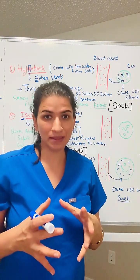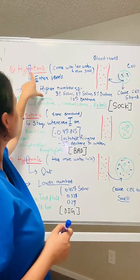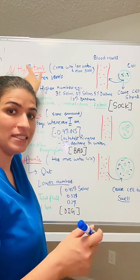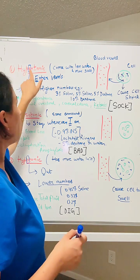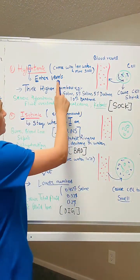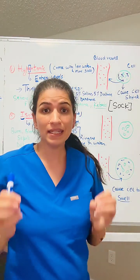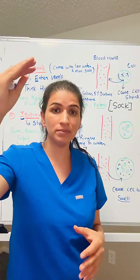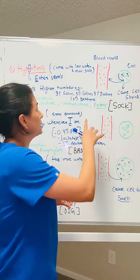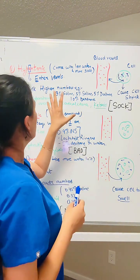The cell is going to shrink at that time. You can remember this by correlating the 'e' in hyper with 'enter' — the hypertonic solution basically enters the vessels. Also remember: hyper means higher numbers, so examples like 3% saline, 5% saline, or 10% dextrose — these higher numbers are examples of hypertonic solutions.